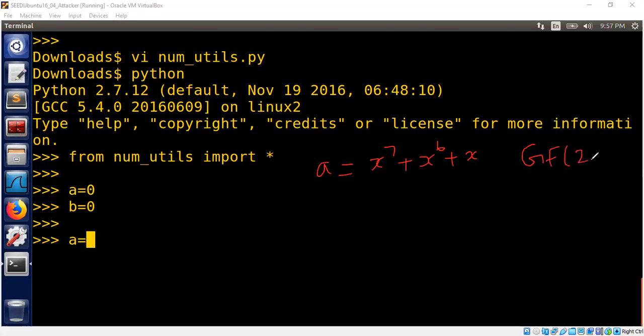Makes sense because the degree of the polynomial is 7. That means it can be an element. It will be an element in GF 2 power 8.